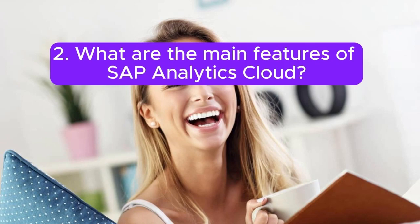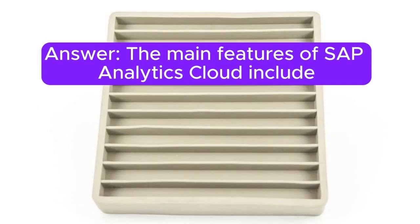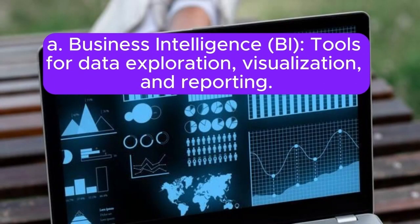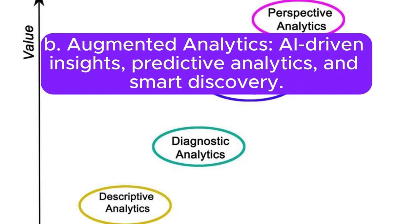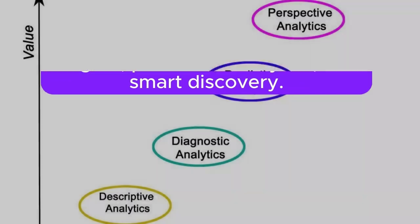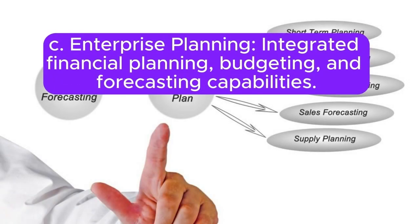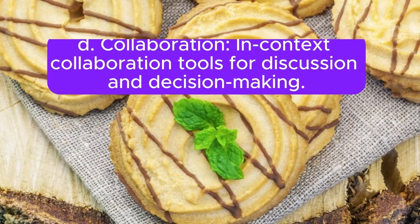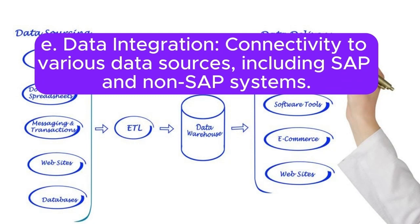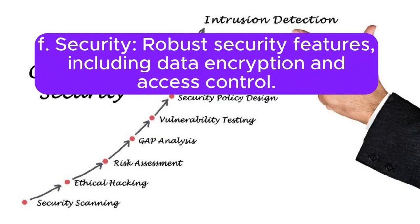Question 2: What are the main features of SAP Analytics Cloud? Answer: The main features include: A. Business Intelligence BI — tools for data exploration, visualization, and reporting. B. Augmented Analytics — AI-driven insights, predictive analytics, and smart discovery. C. Enterprise Planning — financial planning, budgeting, and forecasting capabilities. D. Collaboration — context collaboration tools for discussion and decision-making. E. Data Integration — connectivity to various SAP and non-SAP data sources. F. Security — robust security features including data encryption and access control.